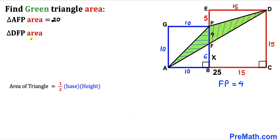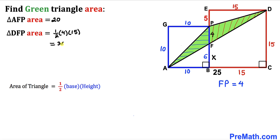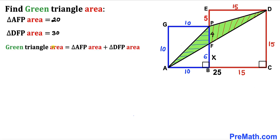Now let's calculate the area of triangle DFP. The base is 4 and the height is 15. The area is one-half times 4 times 15, which simplifies to 30 square units.